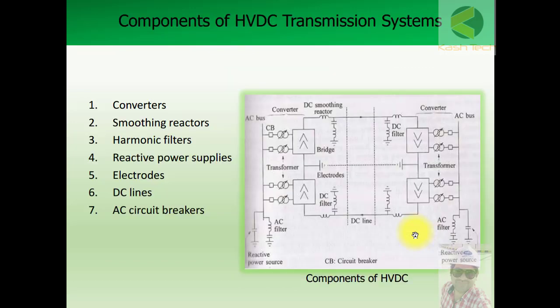The following are the components of HVDC transmission systems that we will discuss: number one, converter station; number two, smoothing reactors; number three, harmonic filters; number four, reactive power supplies; number five, electrodes; number six, DC lines; number seven, AC circuit breakers. I have shown here the simplest components of HVDC systems and we will discuss each one in detail.